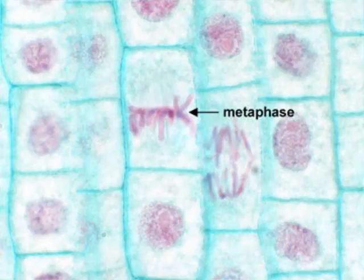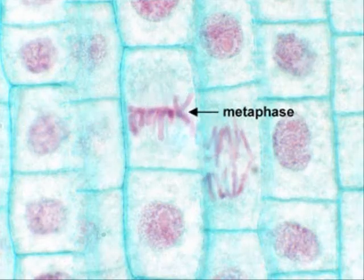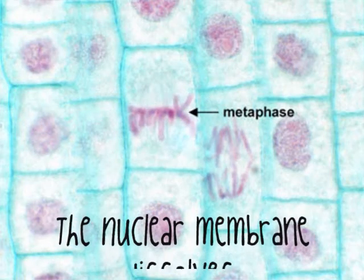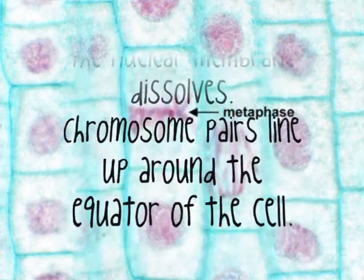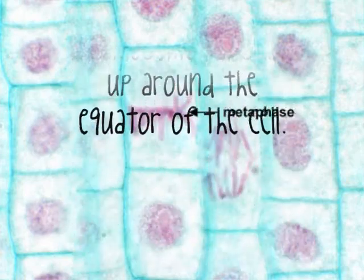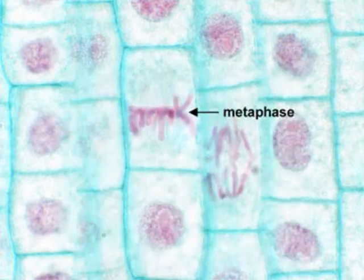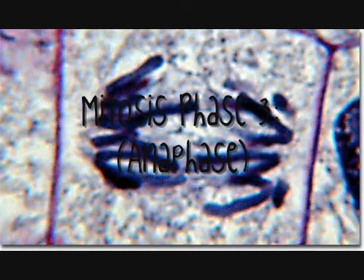Mitosis phase two: metaphase. The nuclear membrane dissolves. Chromosome pairs line up around the equator of the cell.